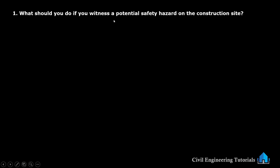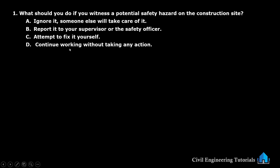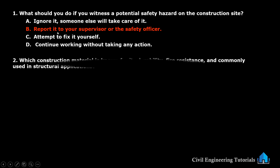First question: what should you do if you witness a potential safety hazard on the construction site? Option A: ignore it, someone else will take care of it. Option B: report it to your supervisor or the safety officer. Option C: attempt to fix it yourself. Option D: continue working without taking any action. The answer is: report it to your supervisor or the safety officer.